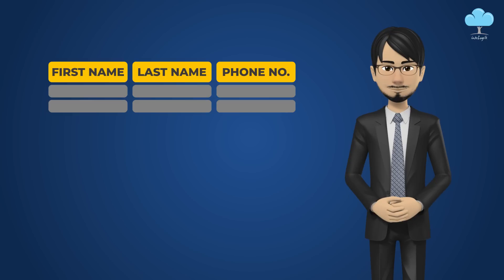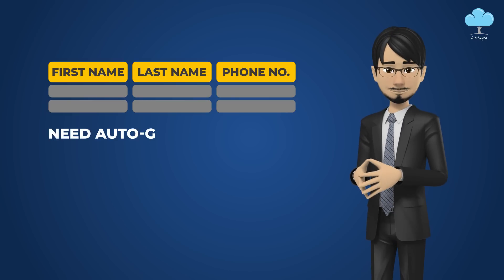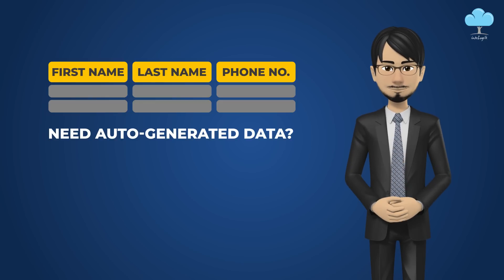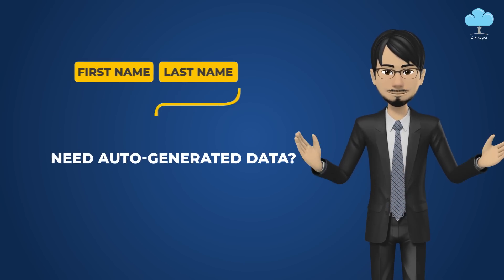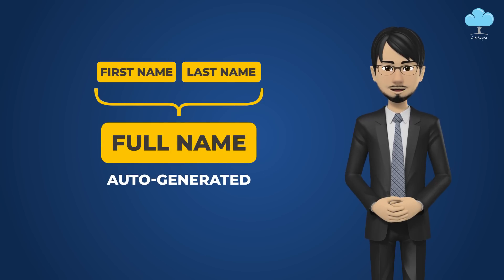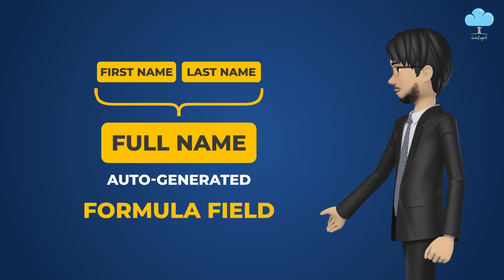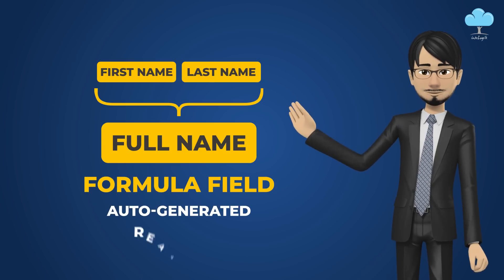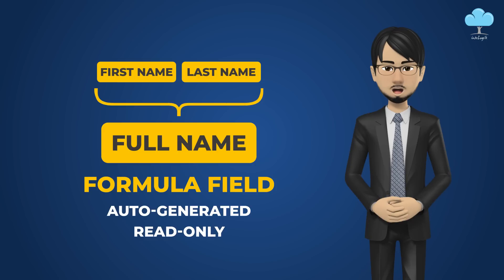last name, phone number, etc. But sometimes you need a field which will generate its own data automatically — for example, combine first name and last name and automatically show the full name. Such fields are called formula fields. They come under the special category fields in Salesforce and they are auto-generated and read-only. We cannot enter data in a formula field; they are automatically populated.